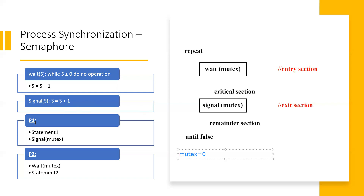We will solve two examples. Two processes: process one has a statement, and we will execute the signal function. Process two also has a statement. For example, initially we must set some value of the semaphore variable and we must execute it. Let's make some assumptions.